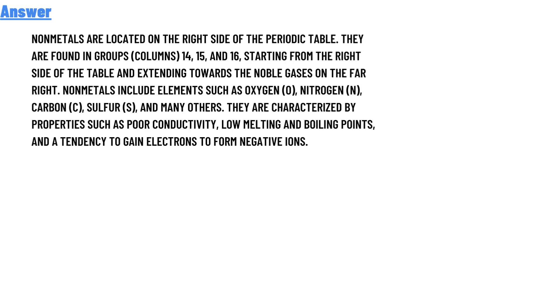Nonmetals are located on the right side of the periodic table. They are found in groups (columns) 14, 15, and 16, starting from the right side of the table and extending towards the noble gases on the far right.